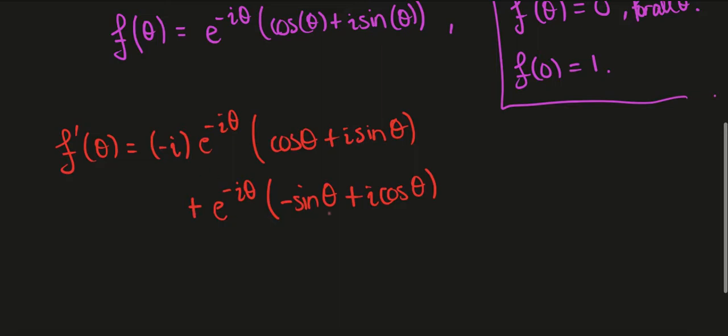Now what I'm going to do to simplify this computation a little bit is multiply by e to the i theta, that will just make things a little clearer, and then I'll have minus i cosine theta